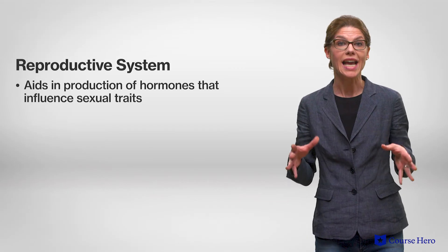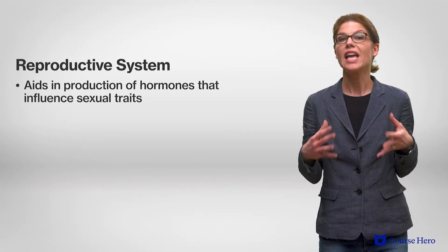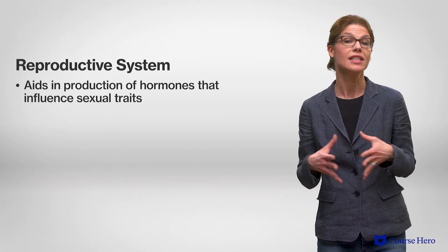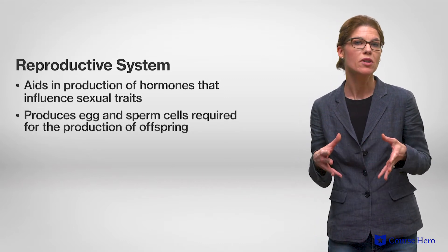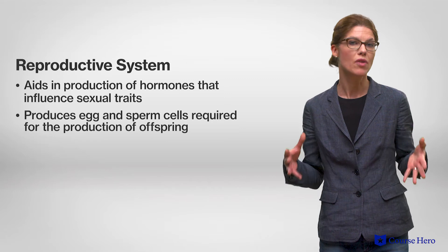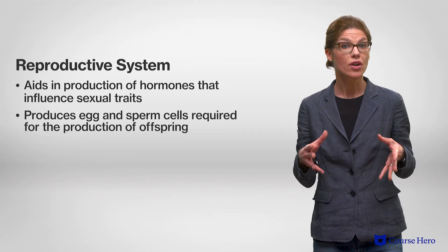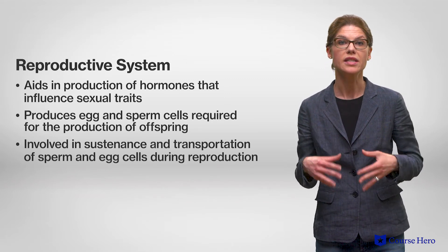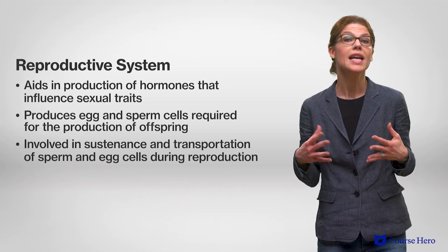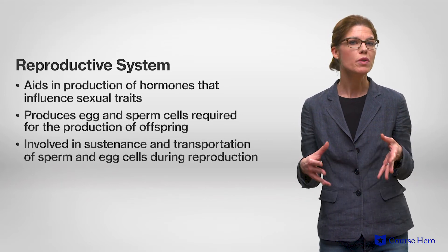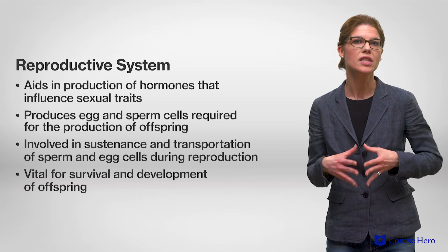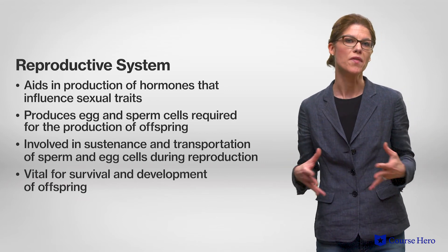The reproductive system supports the production of offspring in several ways. First, it aids in the production of hormones that influence the sexual traits of males and females. Second, it produces the egg and sperm cells required for the production of offspring. Third, it is involved in the sustenance and transportation of sperm and egg cells during reproduction. And finally, the reproductive system is vital for the survival and development of offspring.